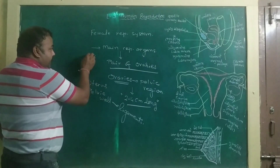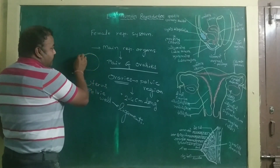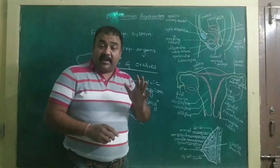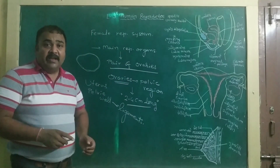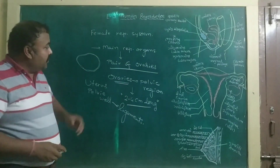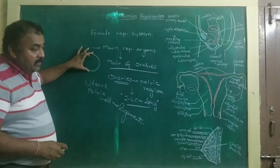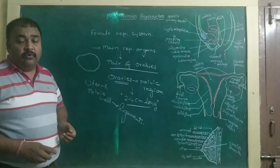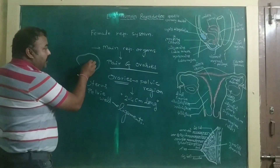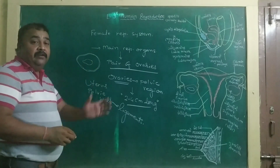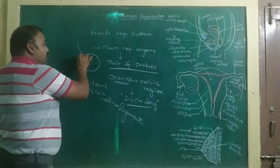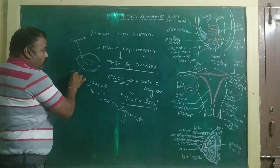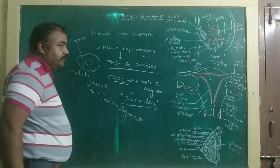The ovary is surrounded by a protective membrane, the same as that of the testis, that is the tunica albuginea. This tunica albuginea is an epithelial covering which covers the stroma part of the ovary. The ovarian stroma is divided into two zones: the outer zone is known as the cortex, and the inner zone is known as the medulla.